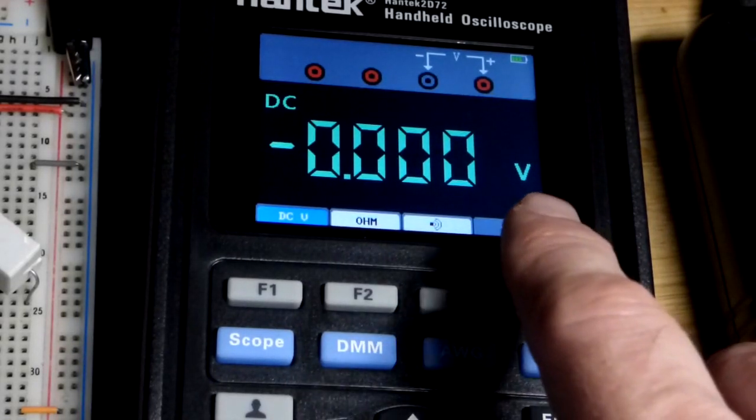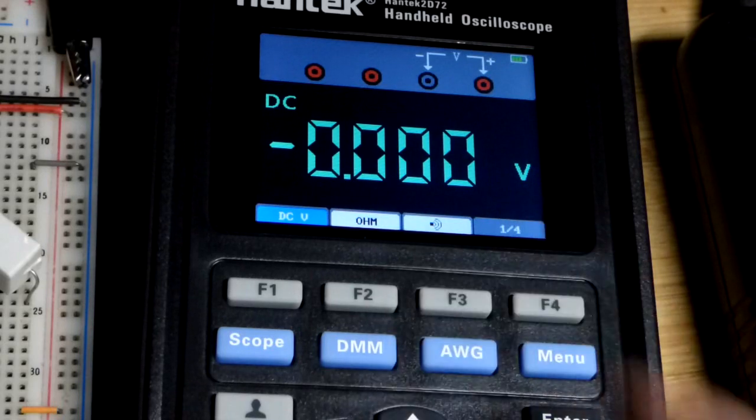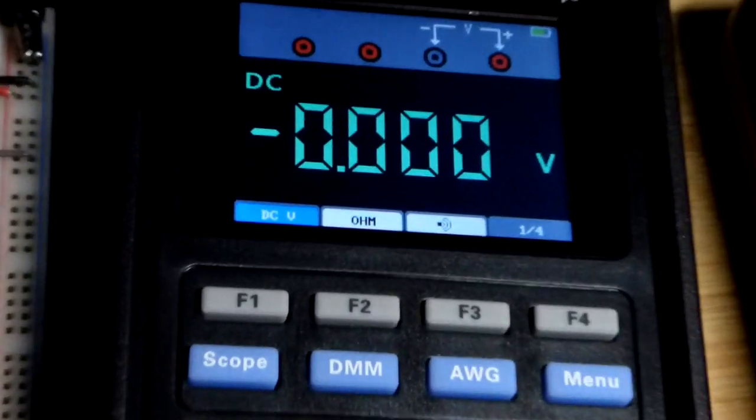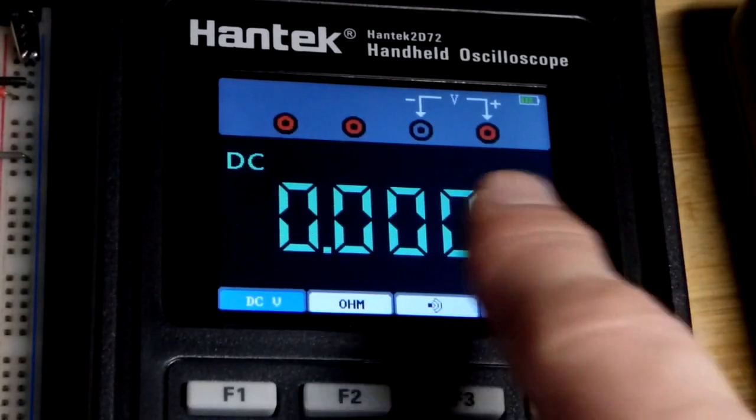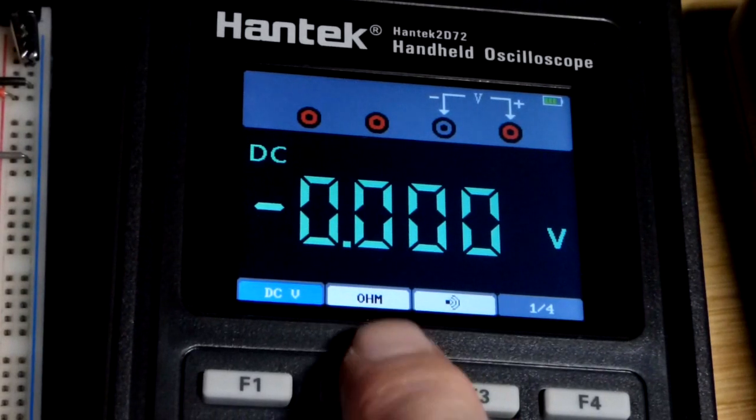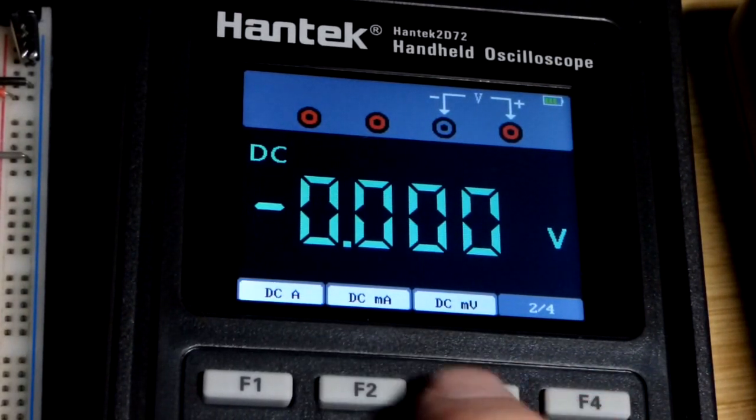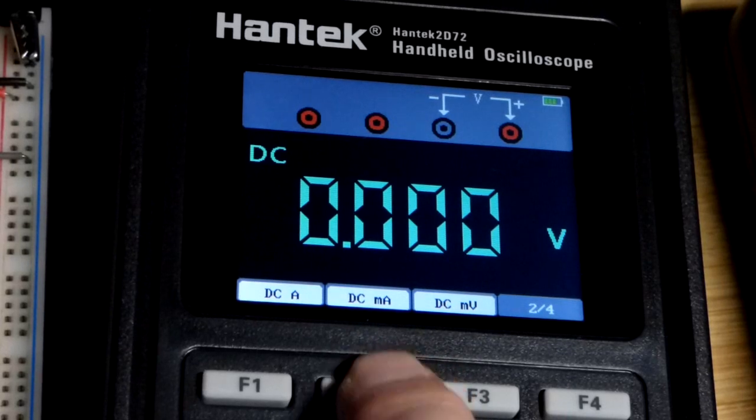And after the light is lit up of course. So it's already set to voltage. And you can see we did an earlier video. We measured the voltage and then the resistance there. Now we're going to go to DC milliamps.